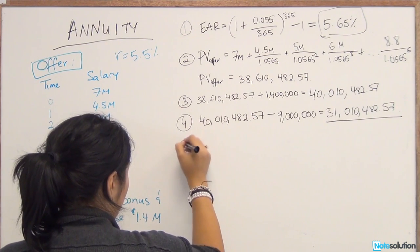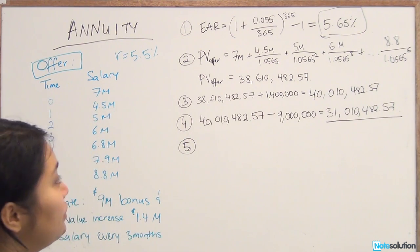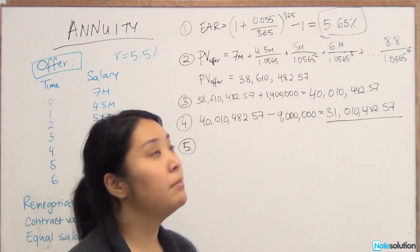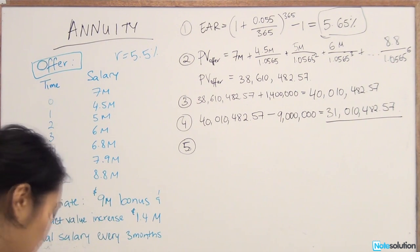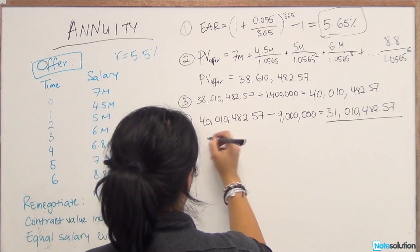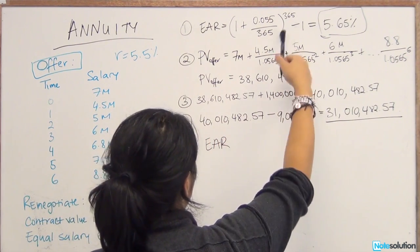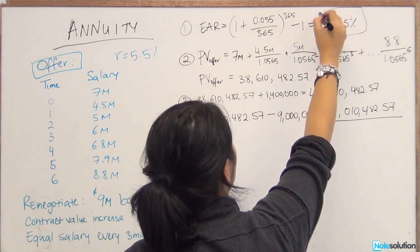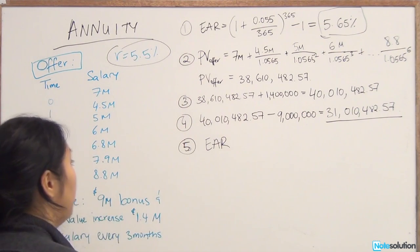Now, before we go on to calculating the actual cash flows, we have an interest rate of 5.65%, but that's going to be in yearly terms. He wants to get paid every three months, so that's quarterly. So now we need to convert the rate to quarterly terms. Instead of reverse calculating it from this rate, we're just going to use the daily compounding rate again.